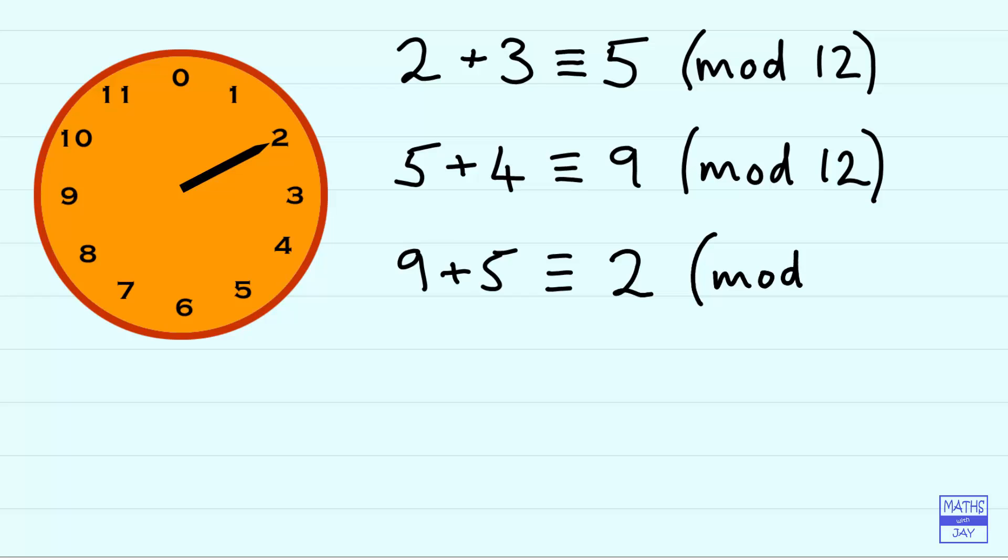So that's like saying 5 hours after 9 o'clock is 2 o'clock. What happens if we add 12 onto 2? Well we end up at 2 again. So 2 plus 12 is 14 and 14 is congruent to 2. So that's a bit like thinking of a 24 hour clock where we've got 1400 hours being the same as 2pm.